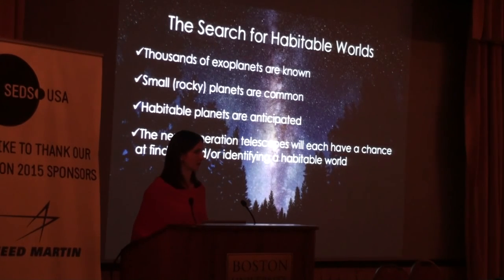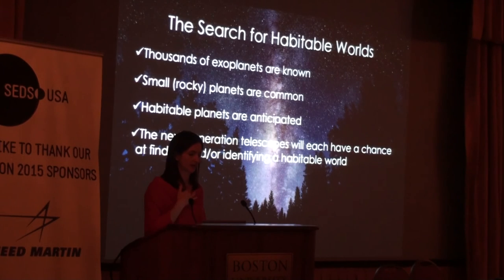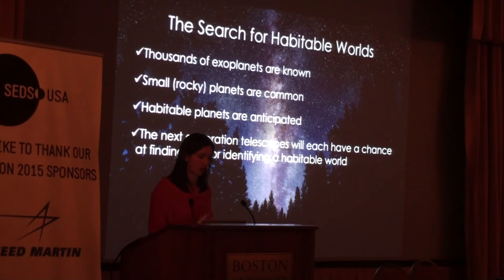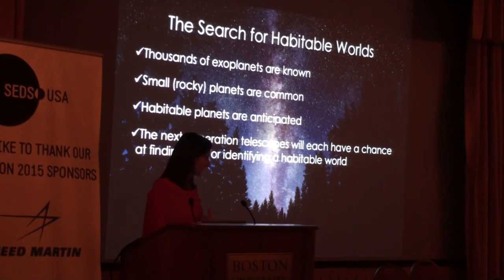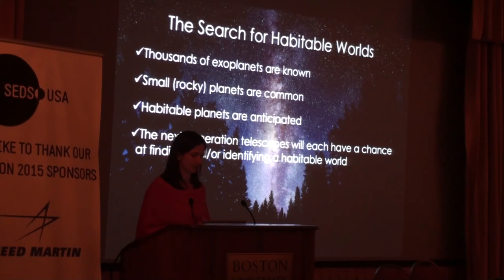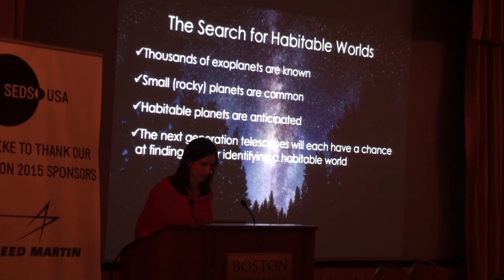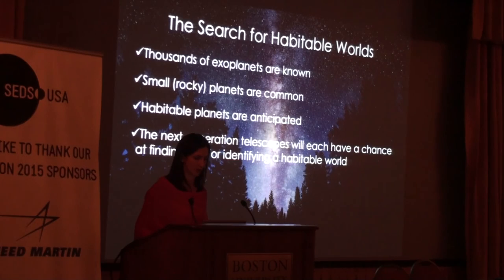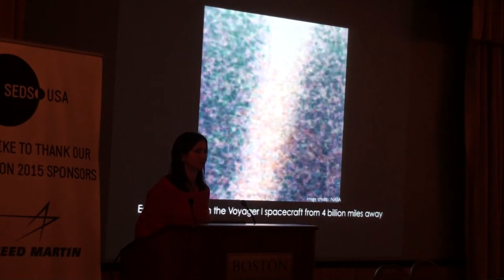To summarize: thousands of exoplanets are known — download Eyes on Exoplanets from NASA and explore for yourself. Small planets are very common; planets two to three times the size of Earth are the most common we know of so far, and evidence suggests smaller rocky planets are even more common. We have about 20 planets in the habitable zone, but we don't know if any are actually habitable until we can study their atmospheres. I told you about the TESS Space Telescope, scheduled for launch in 2017, and the Starshade — our first chance to find the pale blue dot. Thanks for your attention.